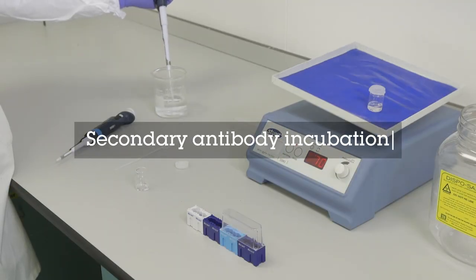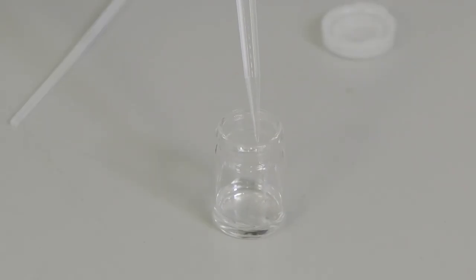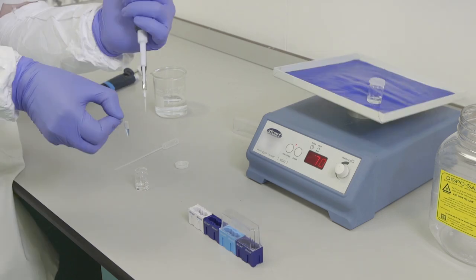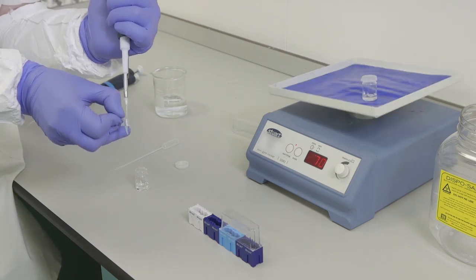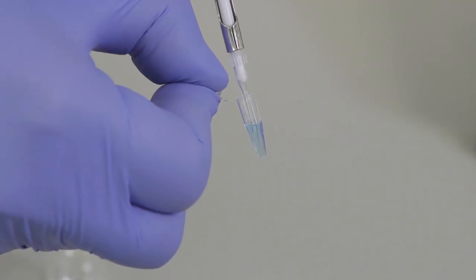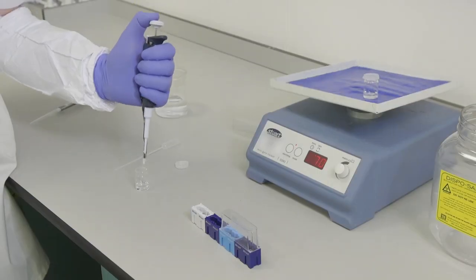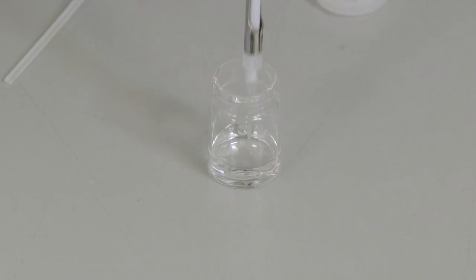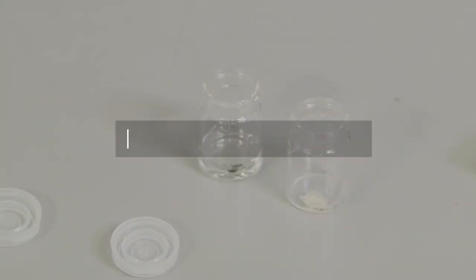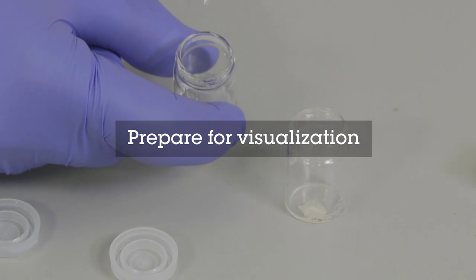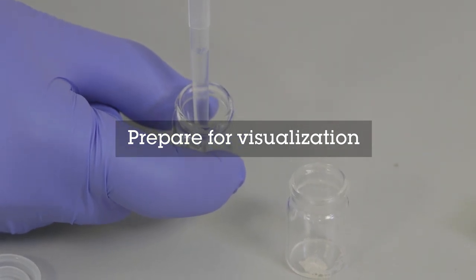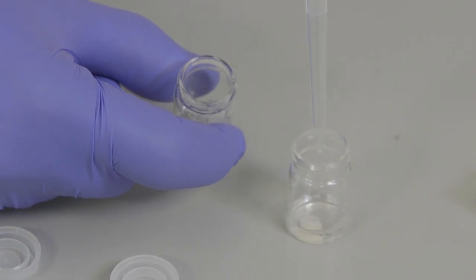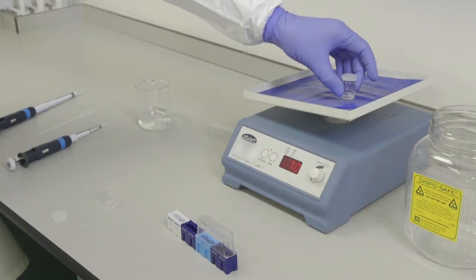Prepare the secondary antibody solution by diluting the secondary antibody in the Tris Triton solution to the correct dilution factor. A good starting point is the guideline provided by Abcam with the product, but it is recommended to optimize this for each antibody used. Here we are using a secondary that is conjugated with AlexaFloor 647. Remove the wash solution and add the secondary antibody solution to the brain slice, leaving it to incubate at room temperature for 1 hour.